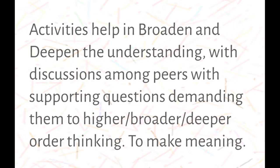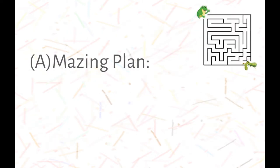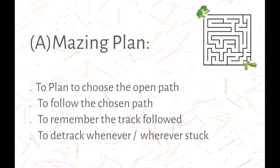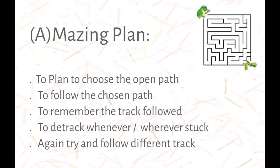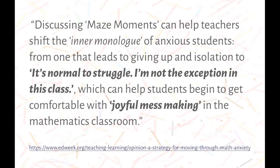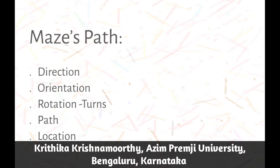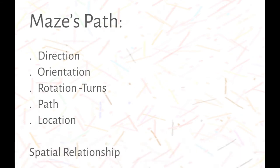This matters a lot, as understanding of the relationship between concepts can be experienced only through such activities. For example, the maze activity is designed to make children plan, choose a path, follow the chosen track, and remember it. If a block is found on the path, they come back by detracking and then follow a different track — the process gets iterated. This activity helps in understanding direction, orientation, turning, path locations, and spatial relationships, leading to construction of networks in topology or graph theory.